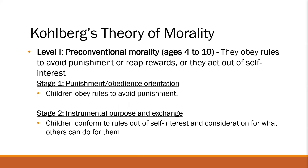Let's start with Level 1, or what we call pre-conventional morality, which is common among children. In this stage, children obey rules to avoid punishment or reap rewards, or they act out of self-interest. Particularly in Stage 1, which is the punishment and obedience orientation, children do good because they don't want to be punished — they do good to avoid punishment.